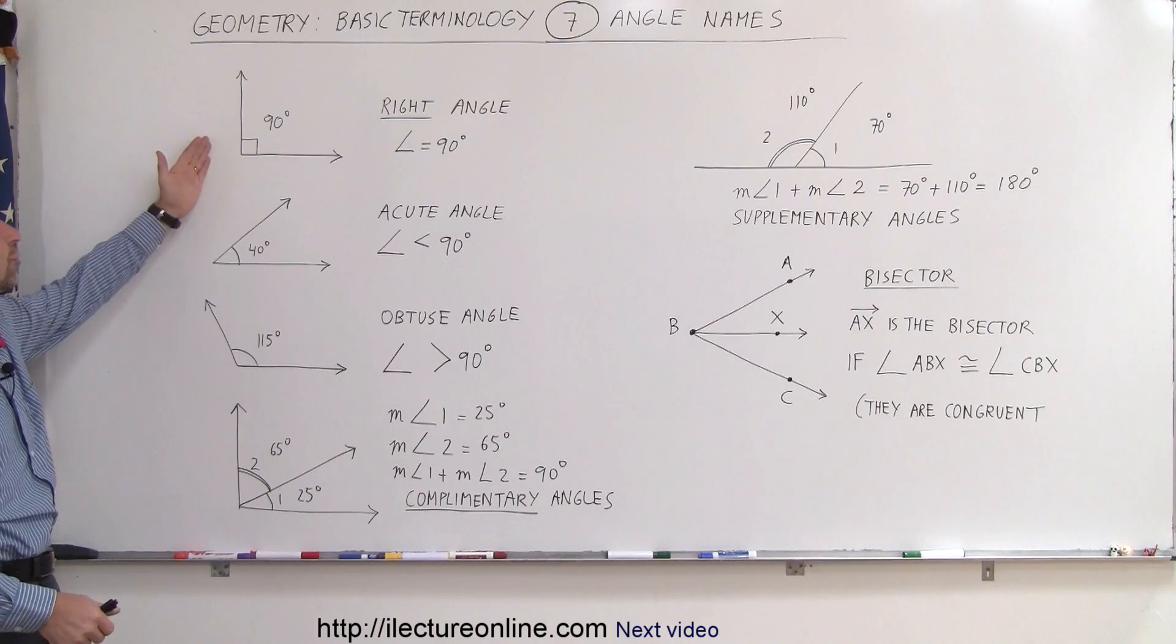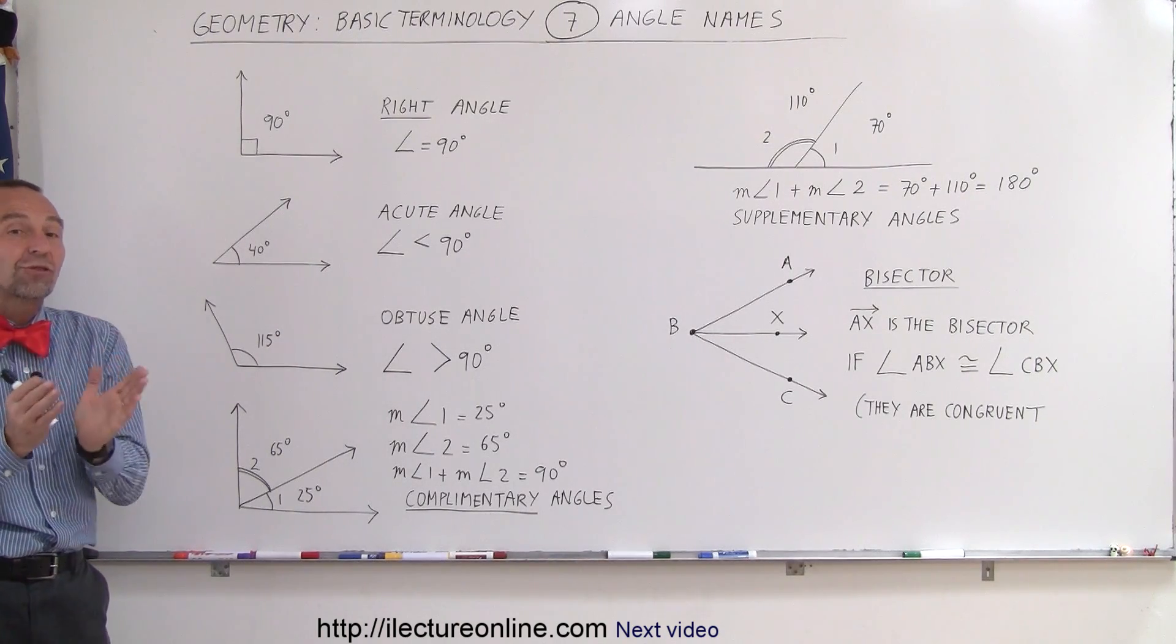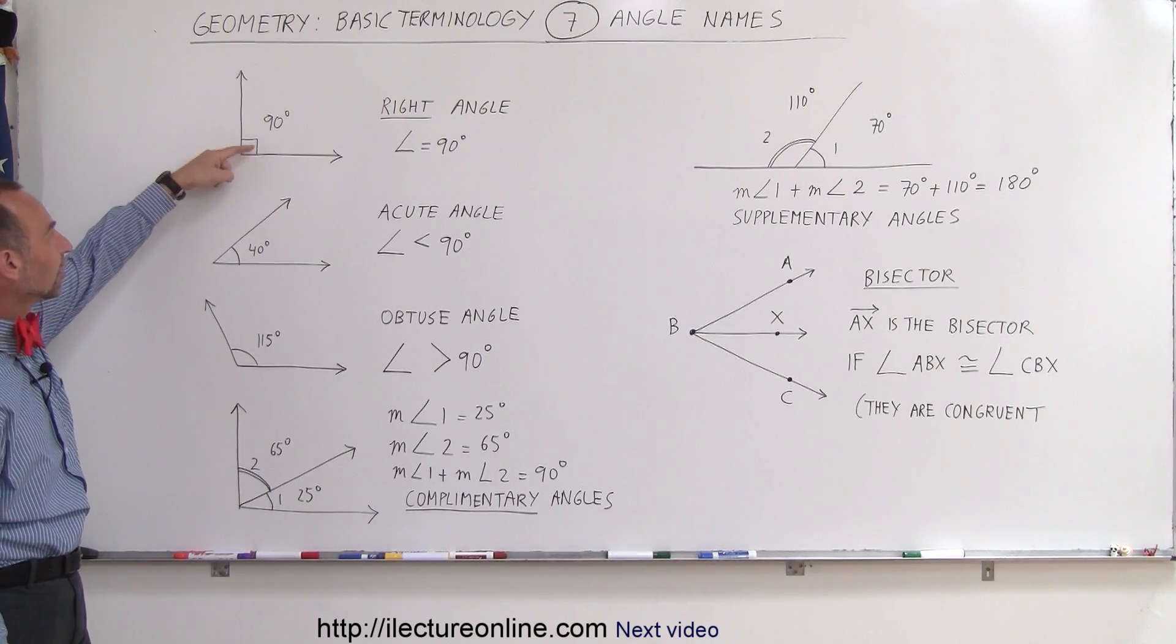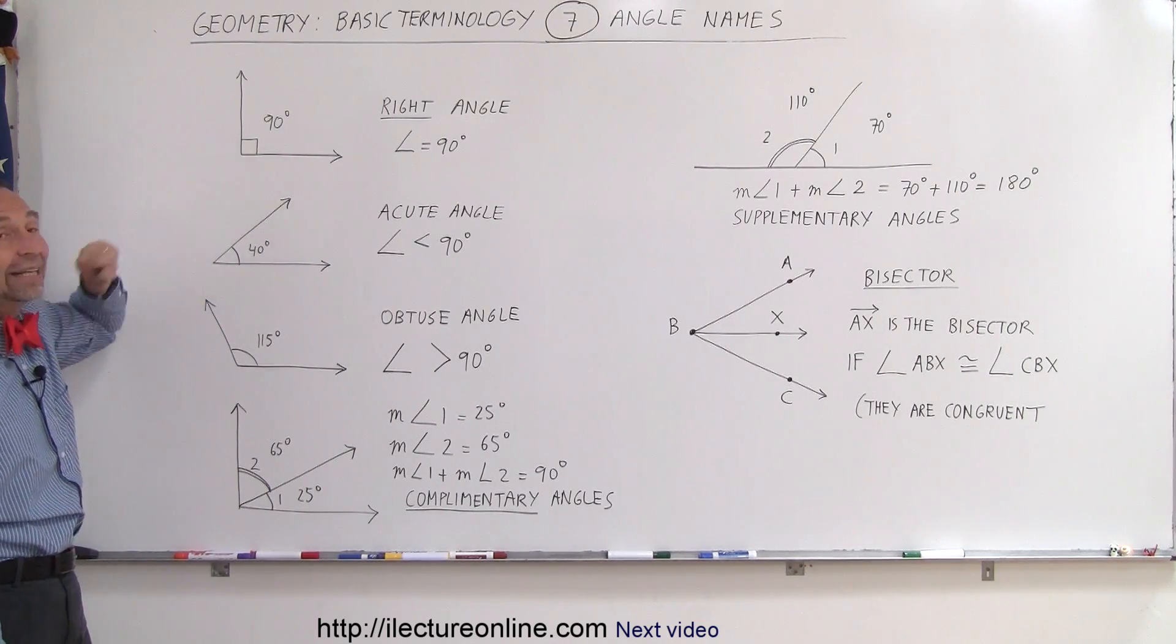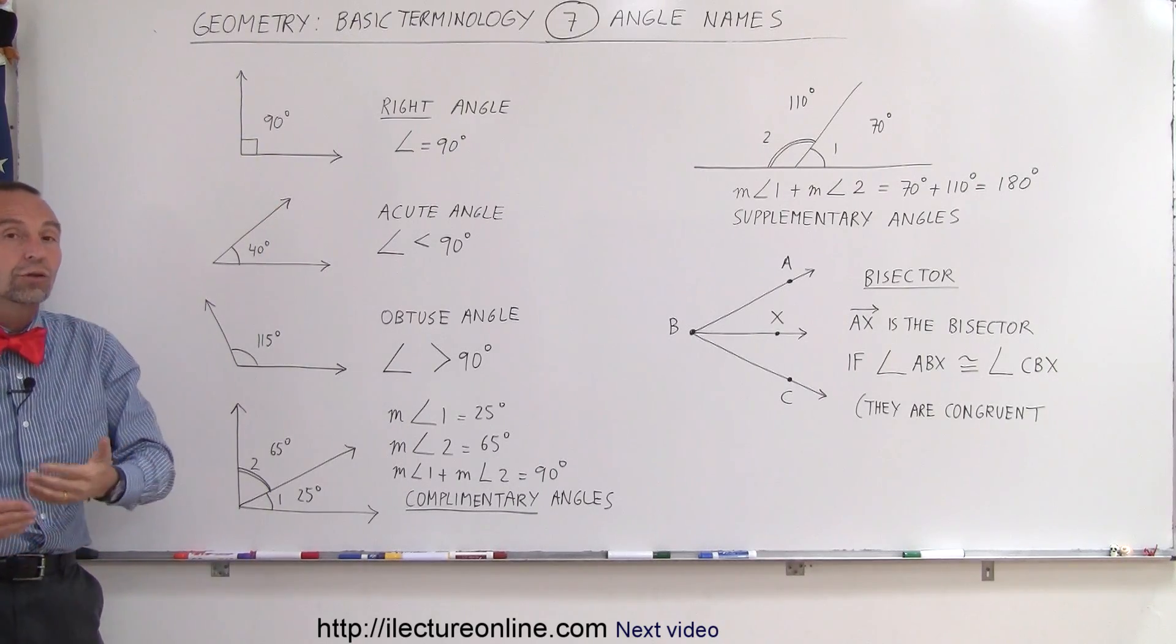The first type we'll run into is what we call the right angle. An angle that has an angle measure of 90 degrees is called a right angle. We indicate that either by drawing a little symbol like this, which indicates a 90 degree angle, or we simply write 90 degrees. So that's what's called a right angle.